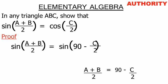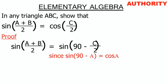Now pay close attention. I'll refer you to our previous tutorial on trigonometric identities, where we treated many important formulas. Under trigonometric ratios, we have the formula: sin(90° − a) = cos(a).